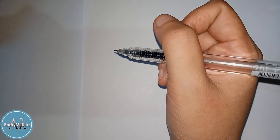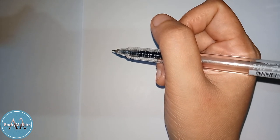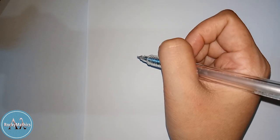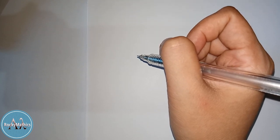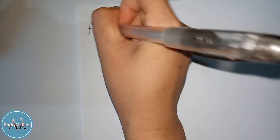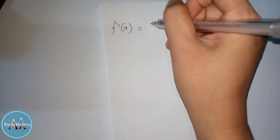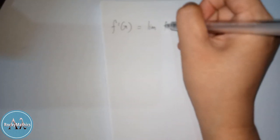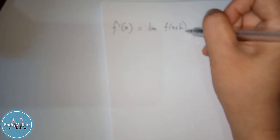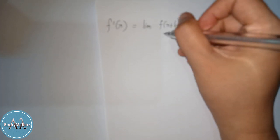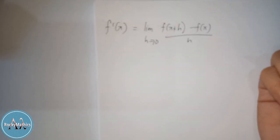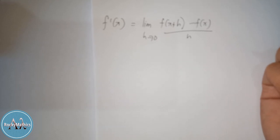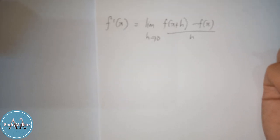So today, what we are going to show here is an example on how to find the derivative using its definition. Before we move on to the specific example, we have to recall first the definition of the derivative, given by this formula: f prime of x is equal to the limit of f of x plus h minus f of x, over h, as h approaches 0. Take note of this formula for finding the derivative using its definition.